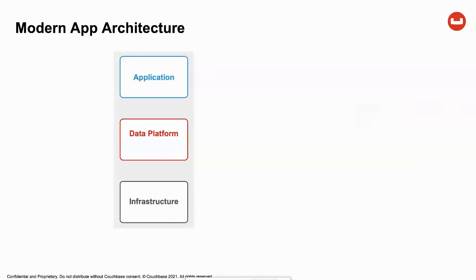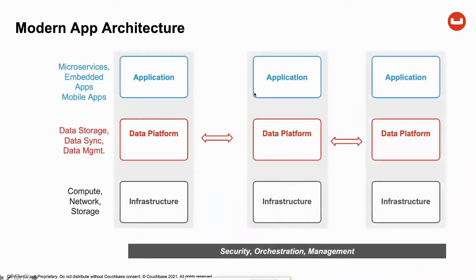Here's a very simplistic model of an application architecture. You have the application tier — your UI and business logic. Then the database tier that holds the data the application relies on. And then the infrastructure tier: storage, compute, and network. When talking about a distributed architecture, you're essentially distributing all three tiers. When distributing the data storage component, you also have to consider the synchronization of data across distributed locations. Couchbase offers an integrated data storage and data synchronization solution, sitting in the database tier.